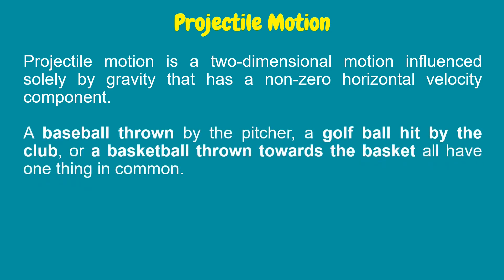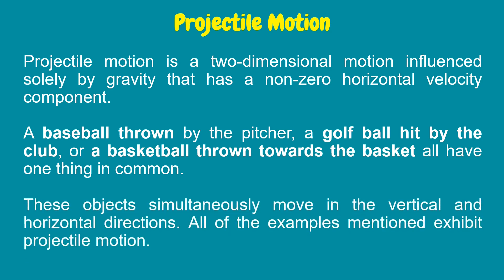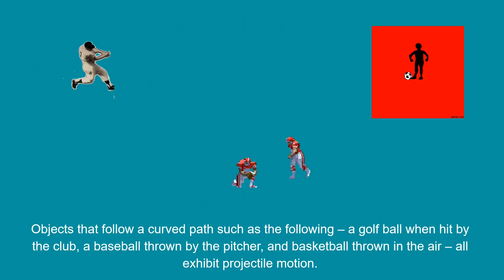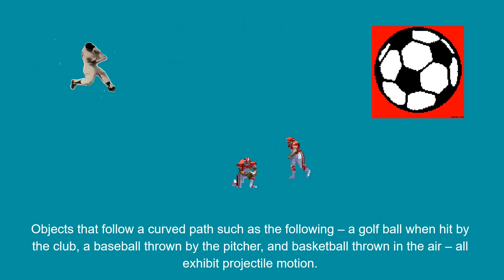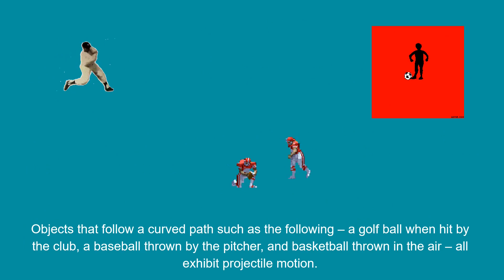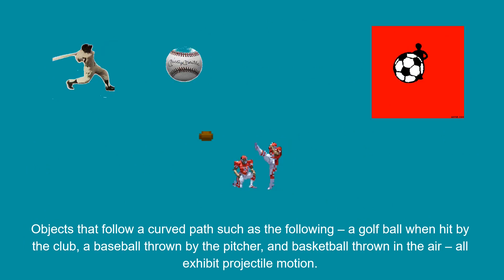A baseball thrown by the pitcher, a golf ball hit by the club, or a basketball thrown towards the basket all have one thing in common. These objects simultaneously move in the vertical and horizontal directions. All of the examples mentioned exhibit projectile motion.